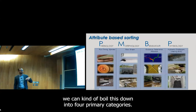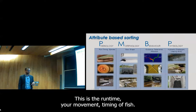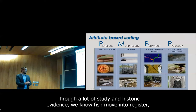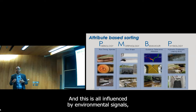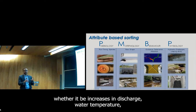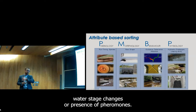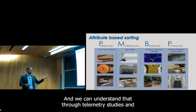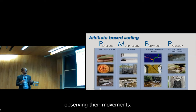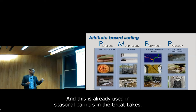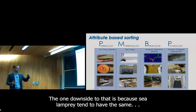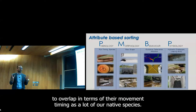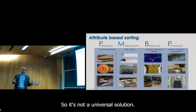When talking about the attributes of fish, we can boil this down into four primary categories. The first is phenology — the run timing or movement timing of fish. Through study and historic evidence, we know fish migratory movements occur at very distinct times, influenced by environmental signals like increases in discharge, water temperature, water stage changes, or presence of pheromones. This is already used in seasonal barriers in the Great Lakes, where barriers are only present when sea lamprey are running then removed when they aren't. The one downside is that sea lamprey tend to overlap in movement timing with a lot of our native species, so it's not a universal solution.